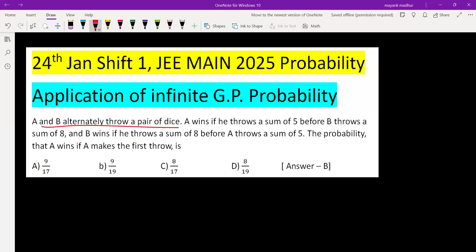A and B alternately throw a pair of dice. A wins if he throws a sum of 5 before B throws a sum of 8, and B wins if he throws a sum of 8 before A throws a sum of 5. When we throw a pair of dice, the number of elements in sample space is 36.